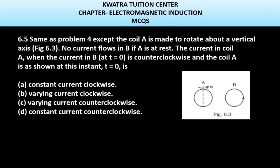No current flows in B if A is at rest. The current in coil A, when the current in B is counterclockwise, means that at instant t = 0, the current flows in B counterclockwise, which means anti-clockwise.